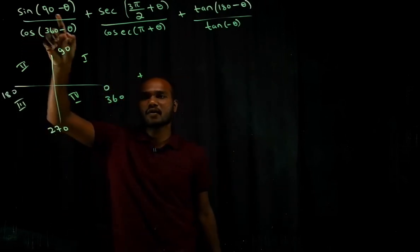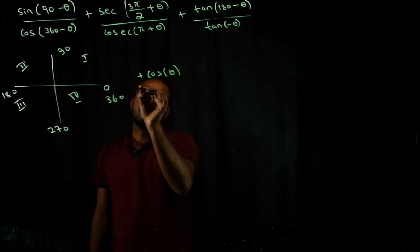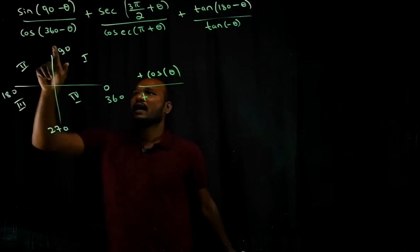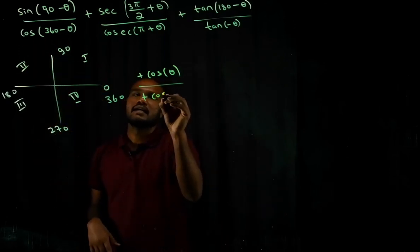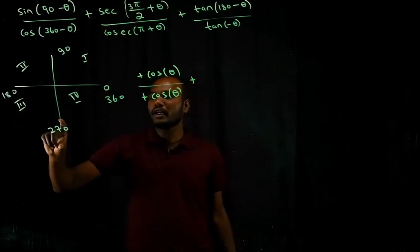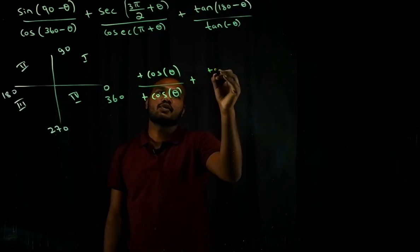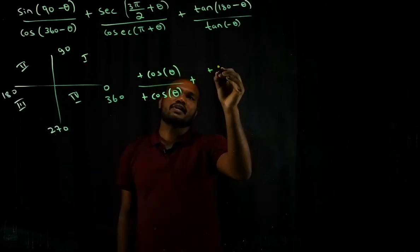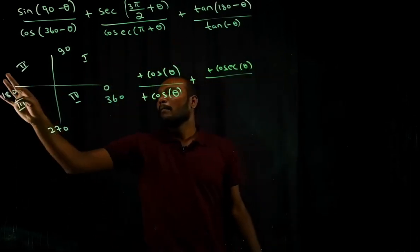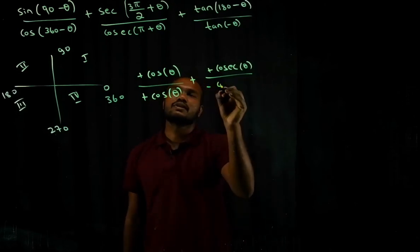cos(360° − θ) is in the fourth quadrant where cosine is positive, supplementary angle, so cos remains cos θ. sec(3π/2 + θ) is 270° + θ, fourth quadrant, secant is positive, complementary so secant converts to cosecant θ. cosec(π + θ) is third quadrant where cosecant is negative, so we get −cosec θ.